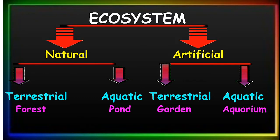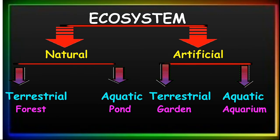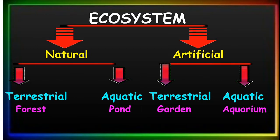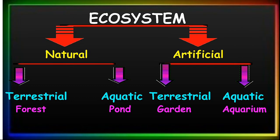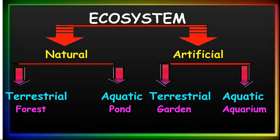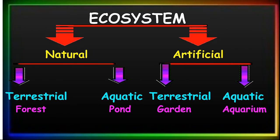Ecosystem is divided into two types: natural ecosystem and artificial ecosystem. Natural ecosystem is divided into two types: terrestrial ecosystem and aquatic ecosystem. Forest is the example of terrestrial ecosystem and pond is the example of aquatic ecosystem. Artificial ecosystem is also divided into two types: terrestrial and aquatic. Garden is the example of terrestrial ecosystem and aquarium is the example of aquatic ecosystem.